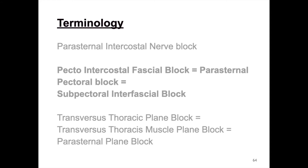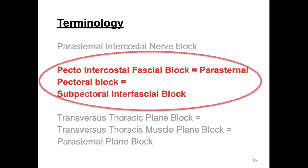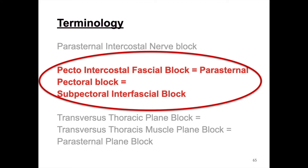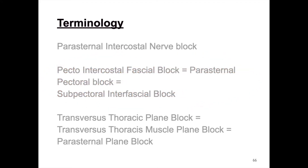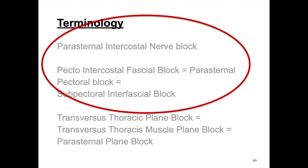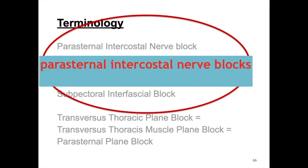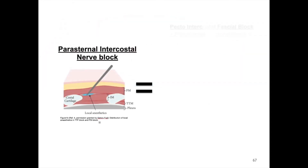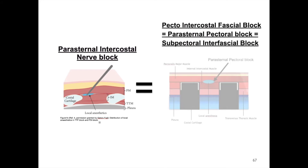To clarify the different terms described in literature for the same blocks, we can conclude that the pecto-intercostal fascial block is the same as the parasternal pectoral block, also named subpectoral interfascial block, and the same as the parasternal intercostal nerve block. In all these blocks, local anesthetic is injected into the plane between the pectoralis major muscle and the intercostal muscles. For simplicity, let's call all these blocks parasternal intercostal nerve blocks, or simply PIN blocks, where the plane of local anesthetic injection is located between the pectoralis major and the intercostal muscle.